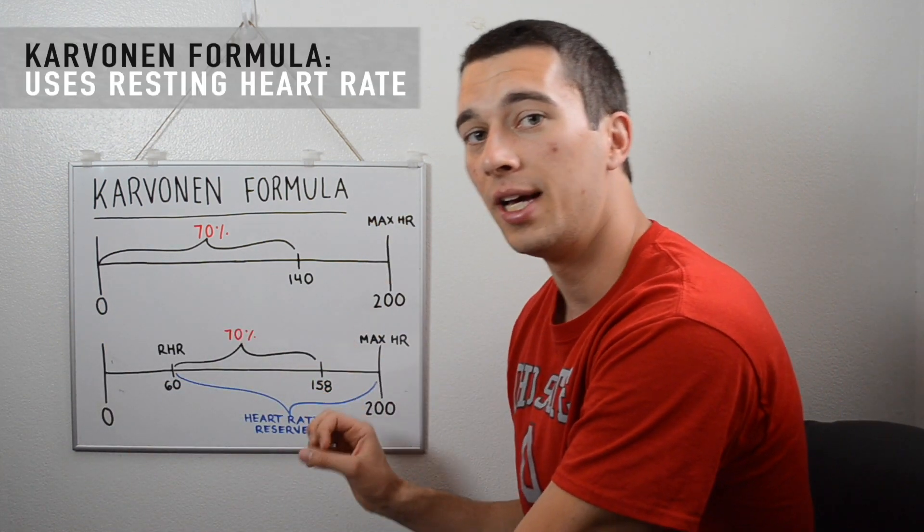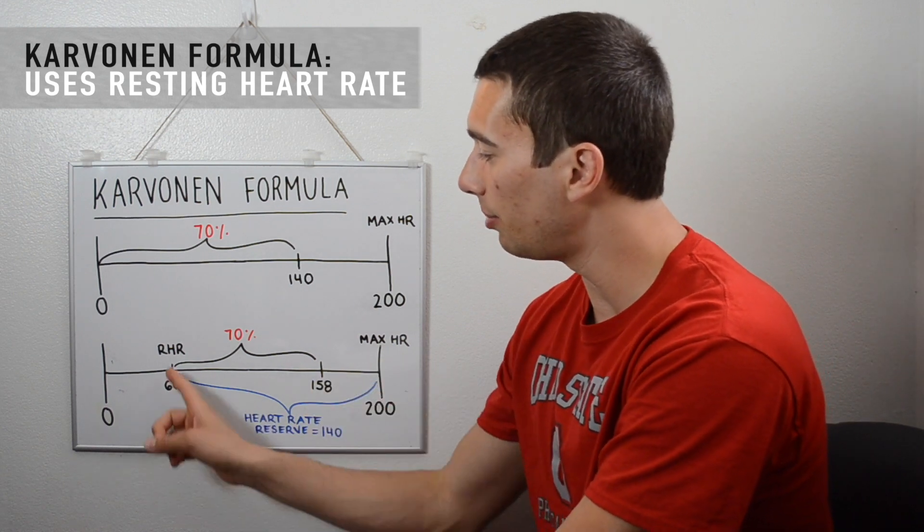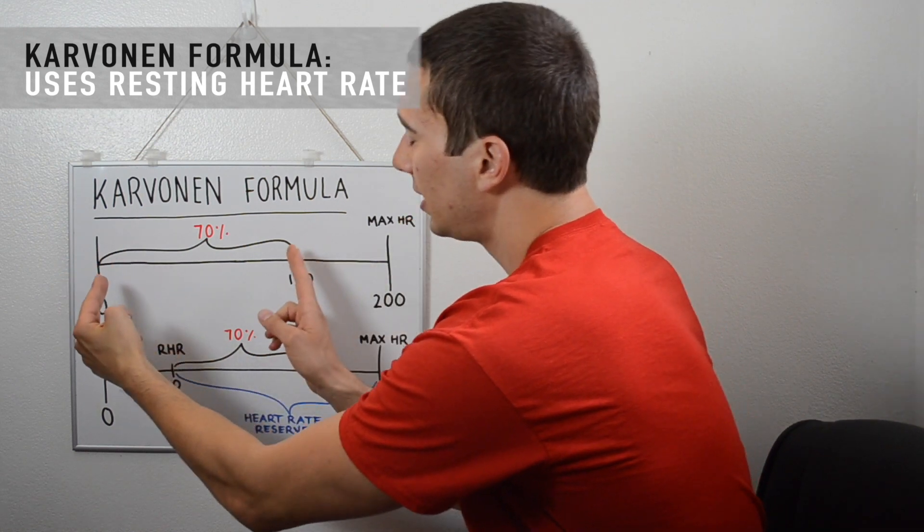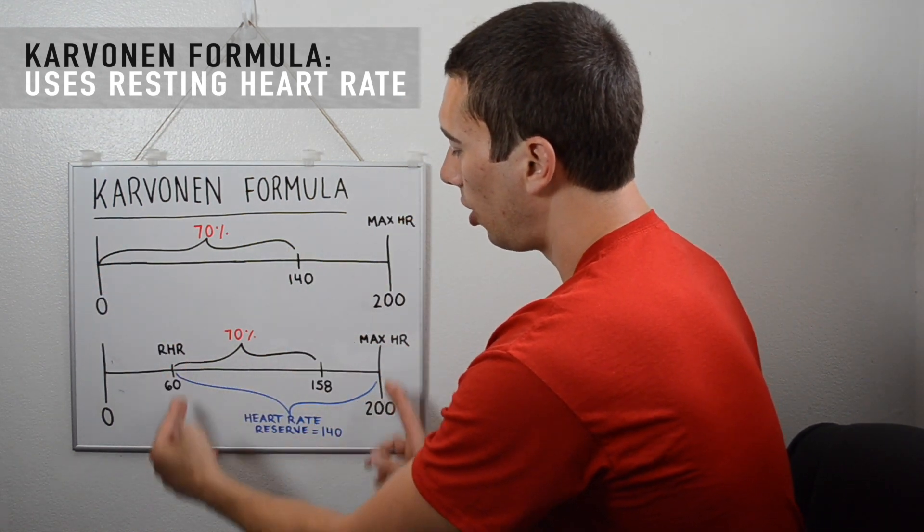The Karvonen Formula though is for individualizing based on people's resting heart rate. So instead of 70% of the total, it's just 70% of what we call the heart rate reserve.